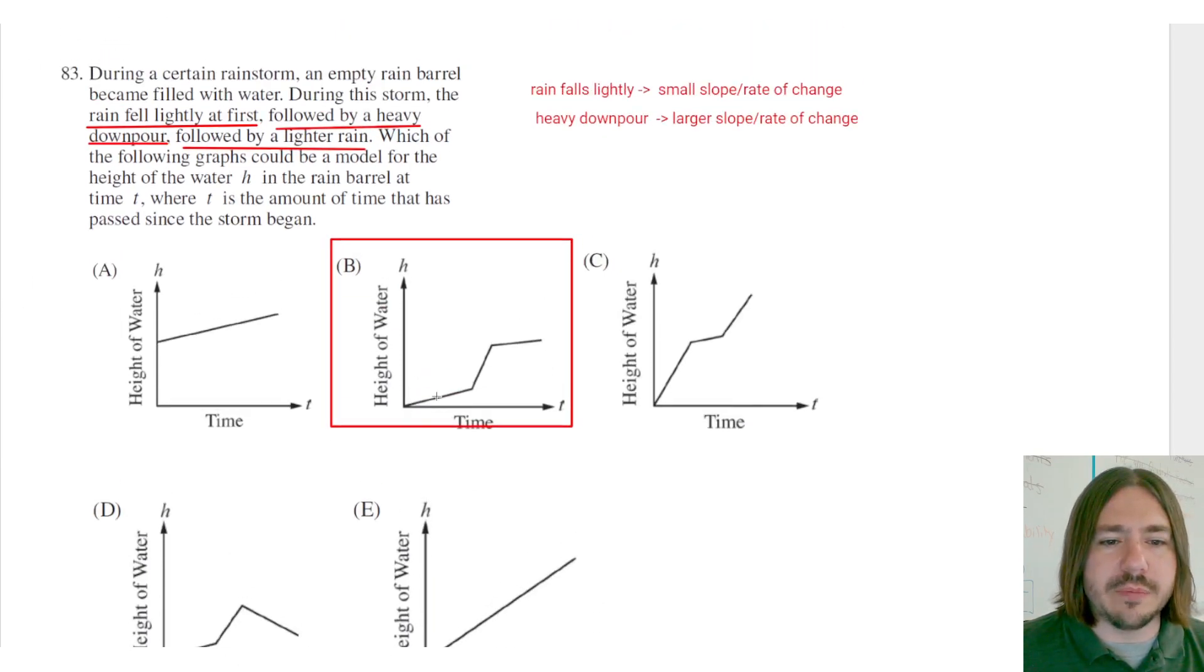You can see that the rain barrel is filling up, but kind of slowly. And then as the rain increases, in terms of how much rain is falling, a heavy downpour, the rain barrel should be filling up faster, and then it kind of slows off when the rain becomes lighter.